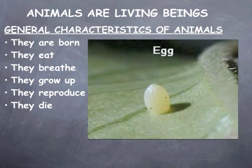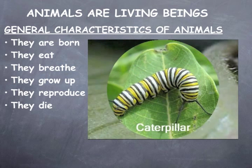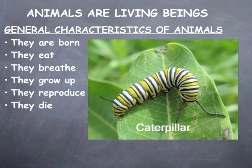A butterfly begins as a tiny egg. Female butterflies lay eggs on leaves and can lay as many as 500 at one time. After about 5 days, a tiny worm-like creature called a caterpillar hatches from the egg. This is the main growth stage of a butterfly. Caterpillars eat all day to prepare for their metamorphosis into a butterfly.